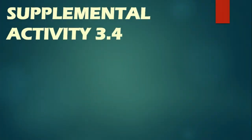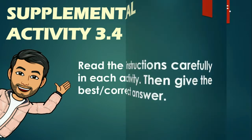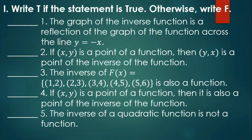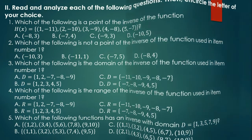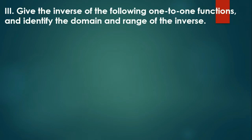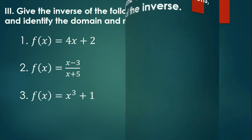For supplemental activity 3.4, read the instructions carefully in each activity and give the best or correct answer. The first part: write T if the statement is true, otherwise write F. Second part: read and analyze each question, then encircle the letter of your choice. Third part: give the inverse of the following one-to-one functions and identify the domain and range of the inverse. Submission of all outputs will be on Friday. We'll check next week. Thank you.